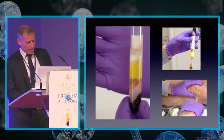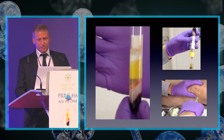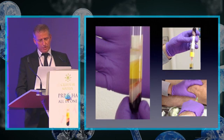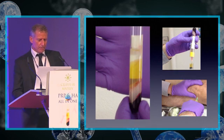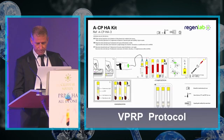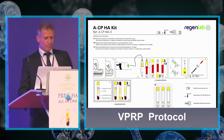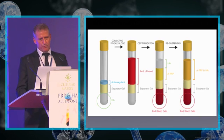On this slide, from top to bottom, you can see the HA layer, PRP layer, gel separator, and red blood cells. You can also see the technique of pumping aspiration to mix HA with PRP before injection. The protocol steps include: collecting blood, centrifugation, resuspension with controlled movement, and pumping aspiration.